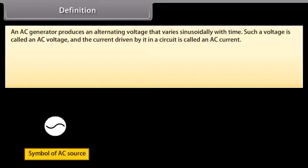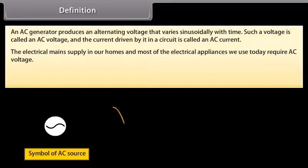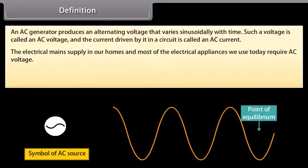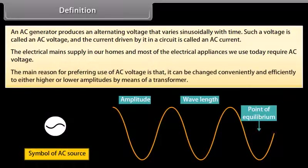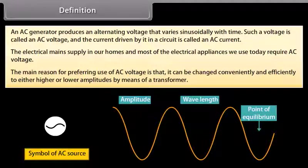An AC generator produces an alternating voltage that varies sinusoidally with time. Such a voltage is called an AC voltage, and the current driven by it in a circuit is called an AC current. The electrical main supply in our homes and most of the electrical appliances we use today require AC voltage. The main reason for preferring use of AC voltage is that it can be changed conveniently and efficiently to either higher or lower amplitudes by means of a transformer.